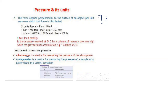The two instruments used to measure pressure are the barometer and the manometer. A barometer measures air pressure in a certain environment — it's a device for measuring atmospheric pressure. A manometer is a device for measuring the pressure of a sample of gas or liquid in a vessel. Other devices include the orifice meter and rotameter.